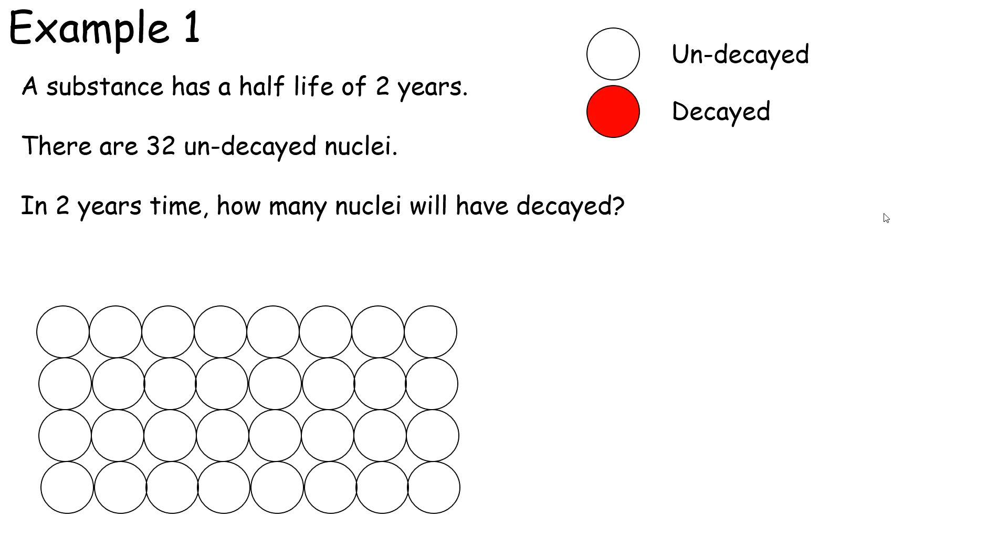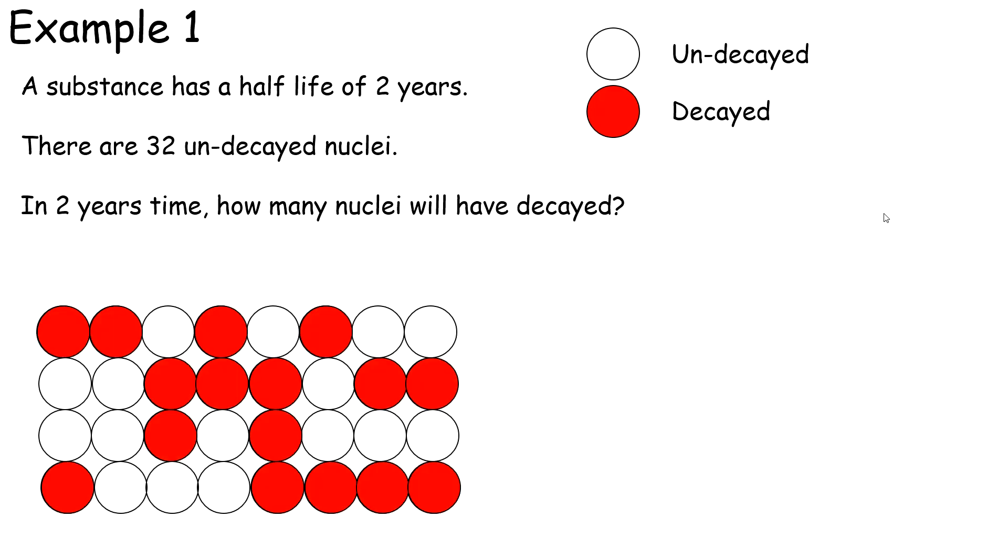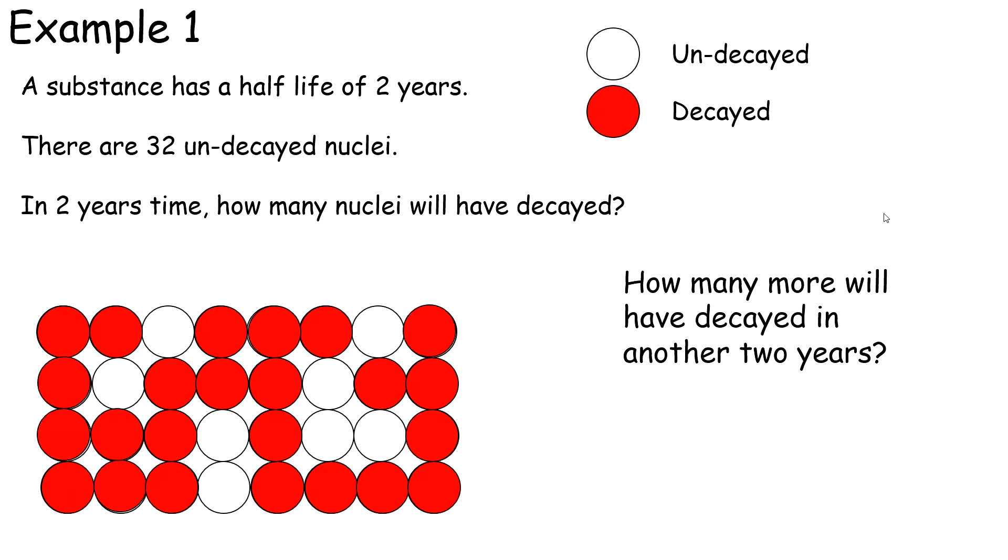A visual example: here we've got a substance with 32 undecayed nuclei all represented by white circles. In two years time, if you waited two years time, if you've waited one half-life, on average half of them will have decayed. So you can count that now, 16 have decayed and 16 have not decayed yet. How many will have decayed in another two years? You've only got 16 that haven't decayed yet. If you wait another half-life, then you will end up with half of what you have after one half-life. So after two half-lives you would end up with eight undecayed nuclei.